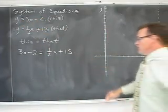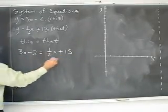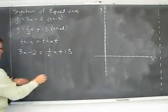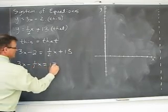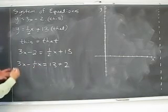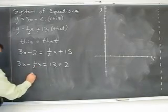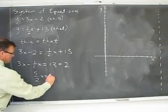And now we have an equation with one unknown linear equation. There are no exponents, so we'll bring the letters to one side, numbers to the other. 3x minus 1 half x equals 13 plus 2. And then keep it in fractional form or change to decimal. It'll still work nicely. Basically, this is going to be equal to 5 over 2x equals 15.